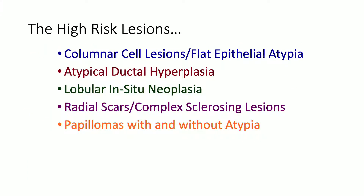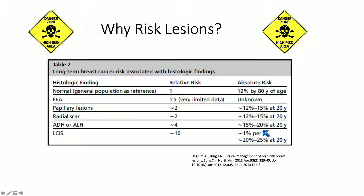So what are the high-risk lesions? There's a finite definition of them in breast. We have our columnar cell lesions and flat epithelial atypia, then ADH, LCIS and ALH, and then our radial scars, complex sclerosing lesions, and finally our papillomas — which we won't spend a ton of time on since we talked about them yesterday.